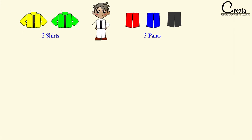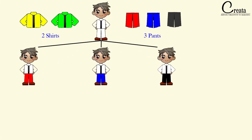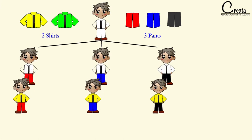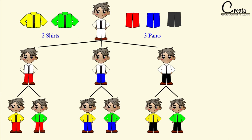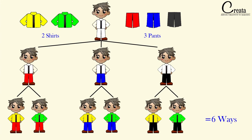The person can use 3 pants — that is the red pants, or the blue pants, or the black pants. And with each pant, he can use 2 shirts — that is the yellow shirt or the green shirt. So in totality, we will have 6 combinations, or 6 different ways through which this person can dress up using 3 pants and 2 shirts. We got the answer as 6. In other words, 3 × 2 = 6. That is, 3 pants × 2 shirts = 6.